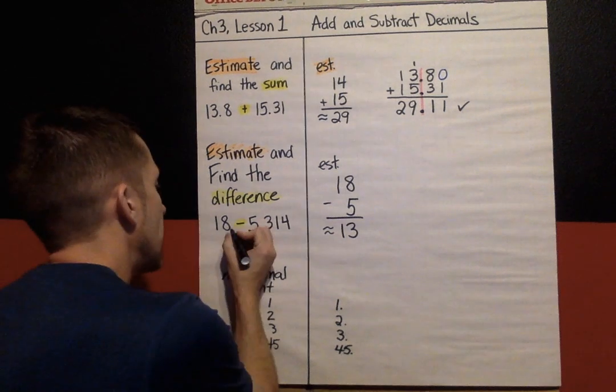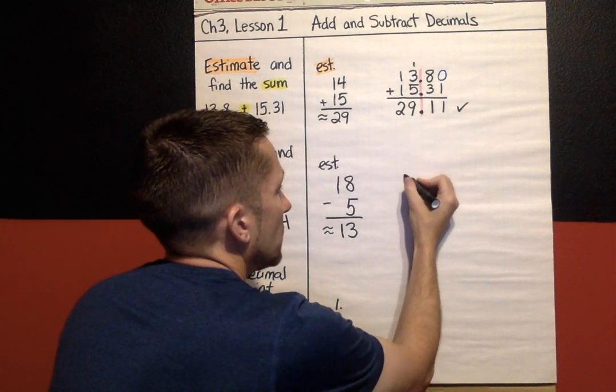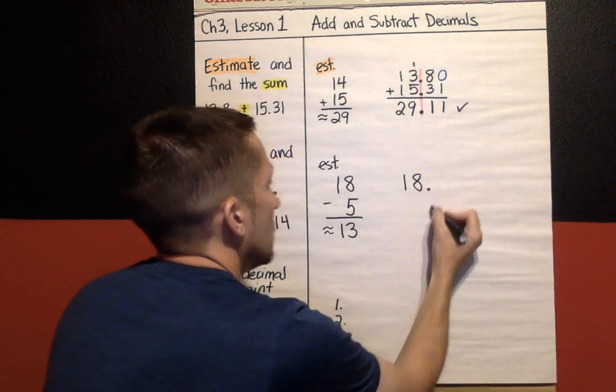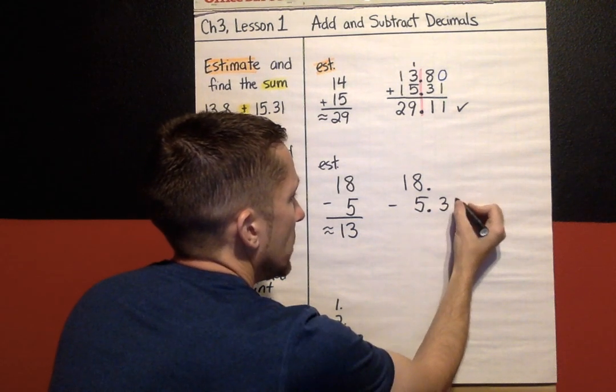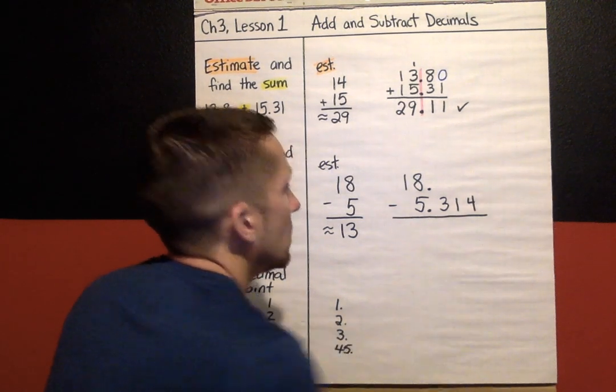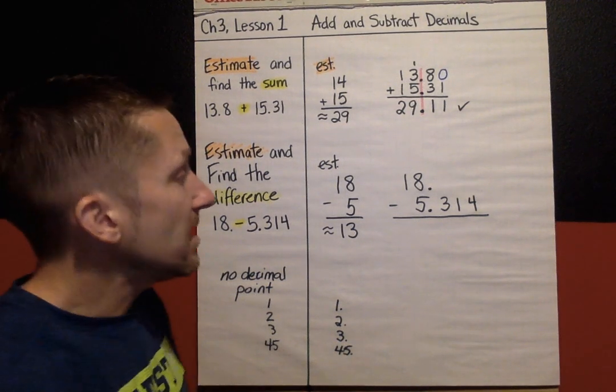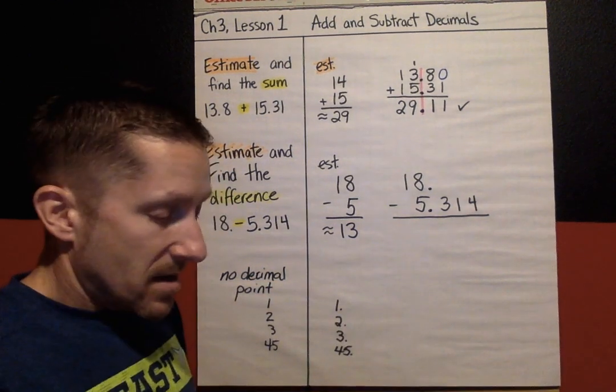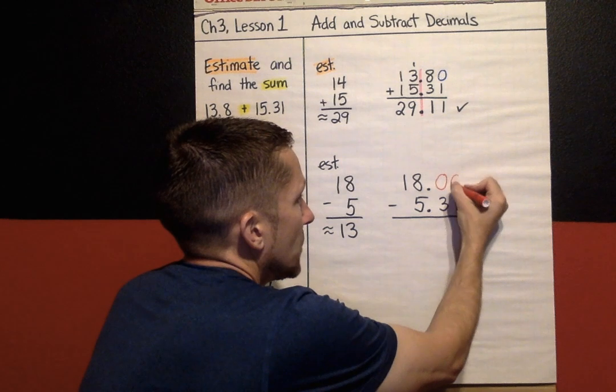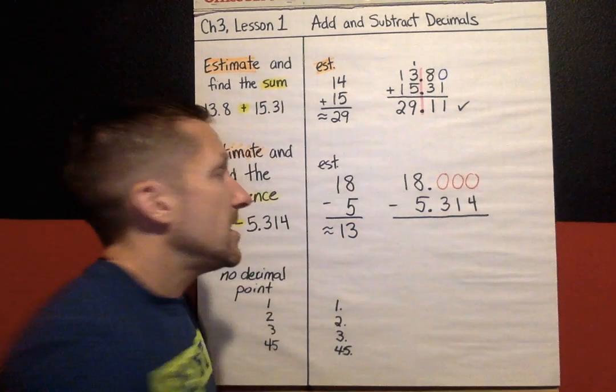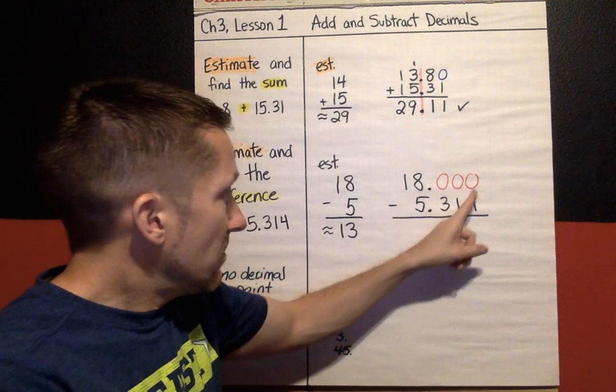So, I'm going to do that right here, 18 decimal point, and now let's find the actual difference. So, 18 decimal point, take away 5, 3, 1, 4. Now, a common mistake here is that when you're subtracting, kids will just write 4, 1, 3. Can't do that. You have to fill in empties with zeros. So, I'm going to put in zeros right here, and then you have to subtract just like you normally would.